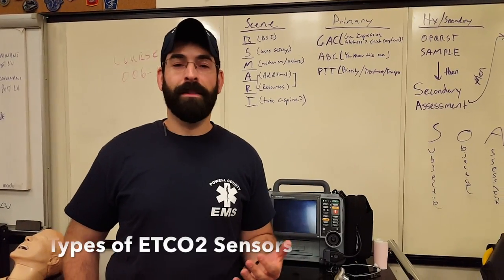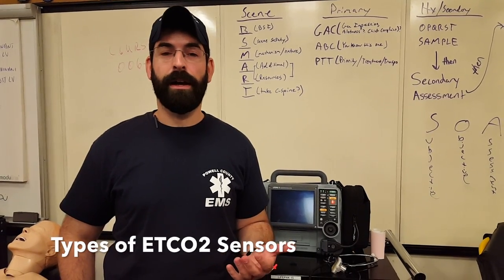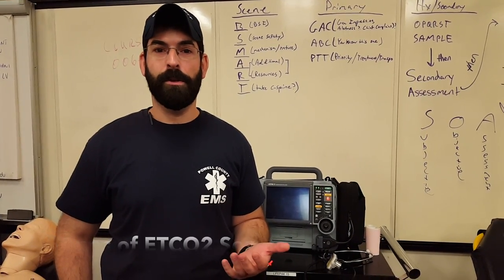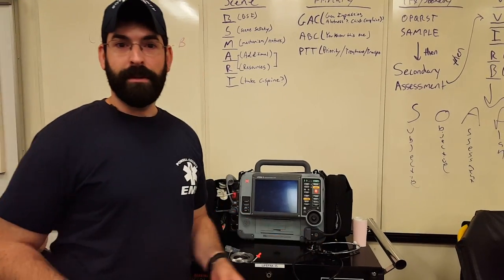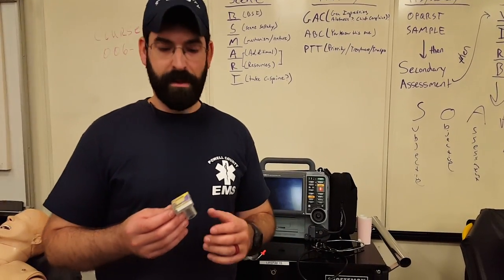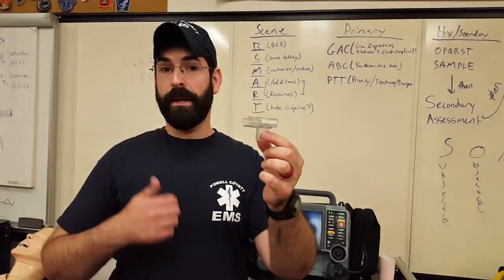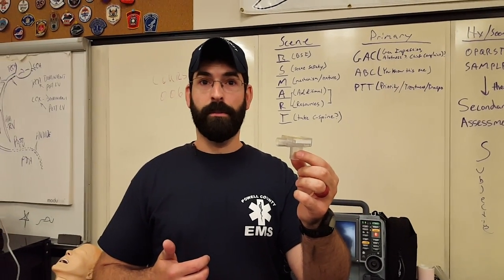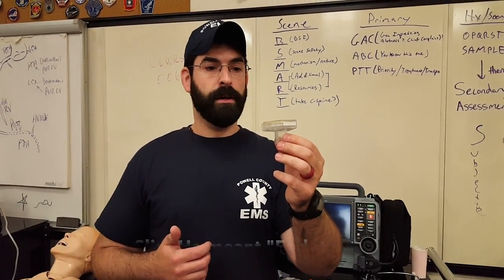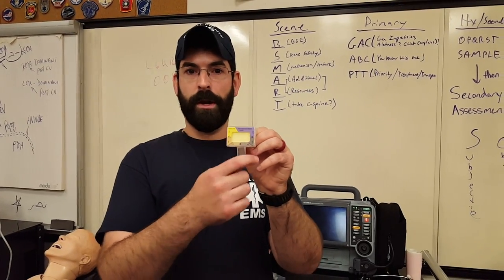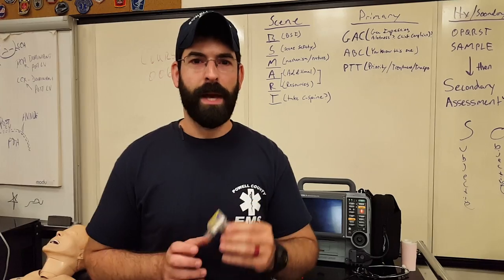On the ambulance we actually carry three different kinds of end tidal CO2 monitoring devices. The first kind you've probably seen in the airway roll is this little colorimetric device. It fits on the end of your tube — be it a King LT or an endotracheal tube — and you get feedback from this little window. When CO2 hits it, it turns gold; when there's oxygen hitting it, it's purple, and it alternates between purple and gold as you ventilate the patient.